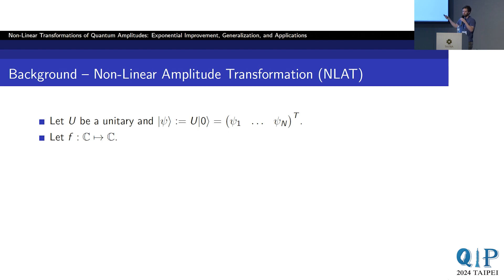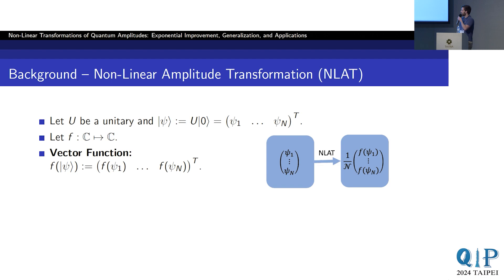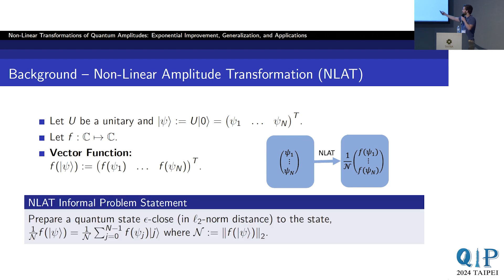Now for a more formal statement of the nonlinear amplitude transformation problem. Let U be unitary — a state preparation unitary — and let f be some function. I define vector functions element-wise on the vector. The nonlinear amplitude transformation problem is to map your initial normalized quantum state to the output normalized quantum state where the function has been applied element-wise.